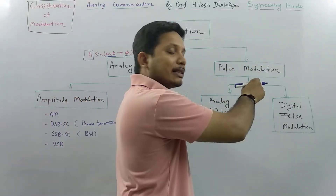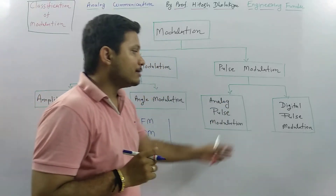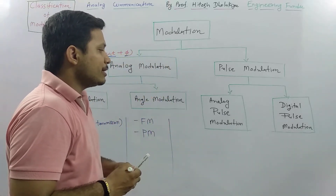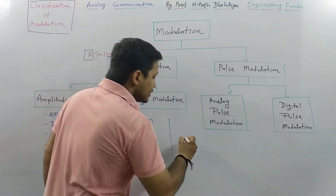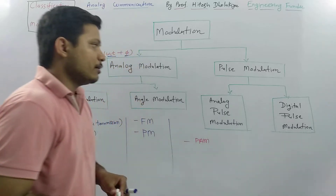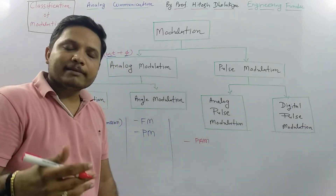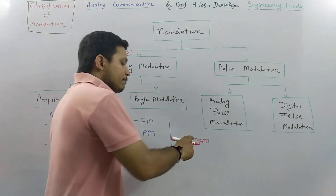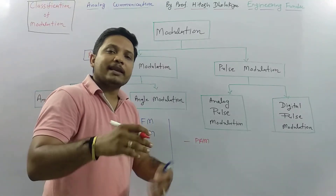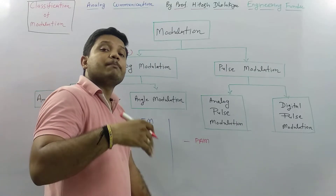Now when it comes to pulse modulation, it is classified into two categories: analog pulse modulation and digital pulse modulation. In analog pulse modulation, the first basic technique is pulse amplitude modulation, PAM. In pulse modulation, we modulate the modulating signal with respect to a pulse. In pulse amplitude modulation, we change the amplitude of the carrier signal with respect to the modulating signal, but in terms of pulses.